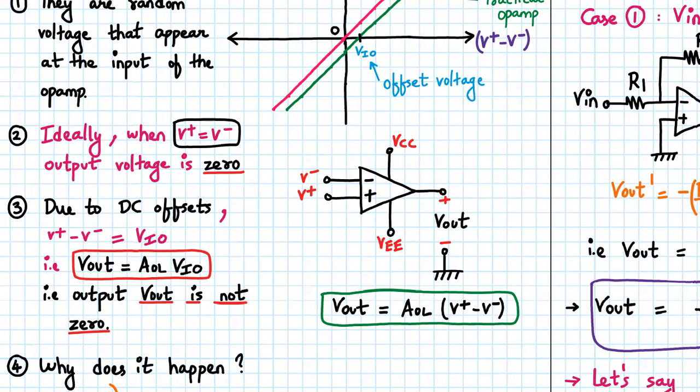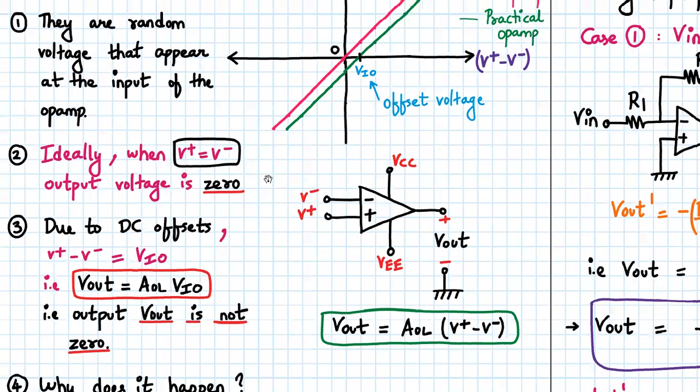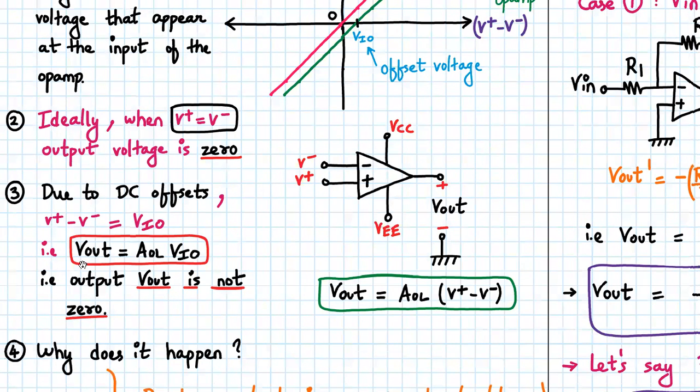Ideally, when V+ equals V-, the output voltage should be zero. But due to DC offset, V+ and V- are not equal; they differ by some quantity called VIO. So the output formula becomes Vout = AOL times VIO.